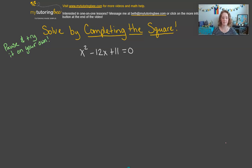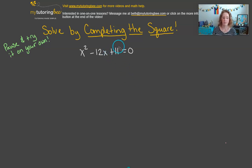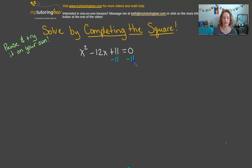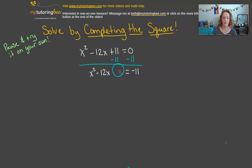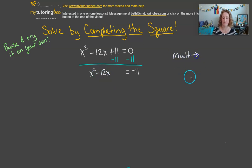We have x squared minus 12x plus 11 equals 0. I encourage you to pause and try it using those three main steps before we work through it together. Our first step is to eliminate the third term so we have room to put in a third term that creates a perfect square. We subtract 11 from both sides, giving us x squared minus 12x — leaving a little space — equals negative 11.